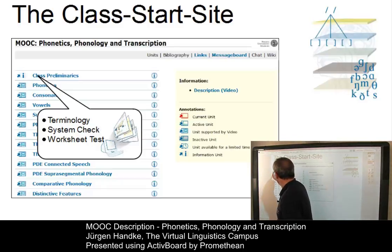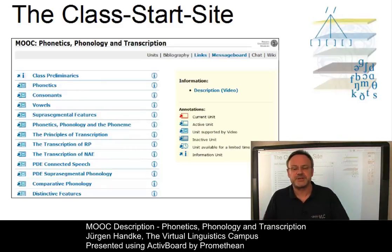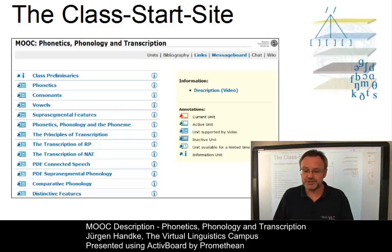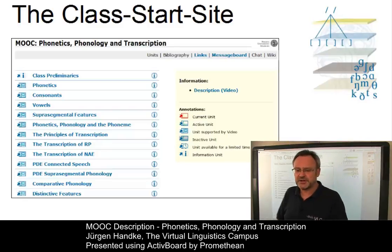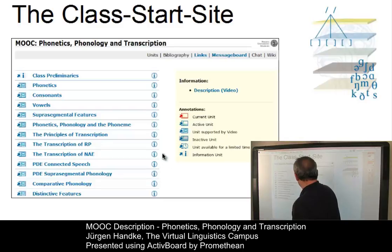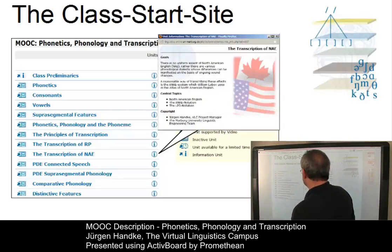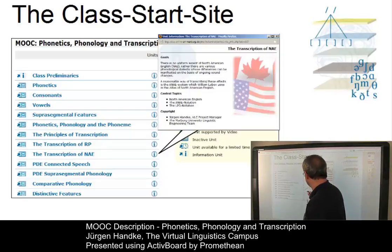The remaining units exhibit the content of this class, and if you wish, you can retrieve an overview of each unit by means of a click on one of the information symbols here. For example, this one here, which displays the content of the unit: the transcription of North American English.